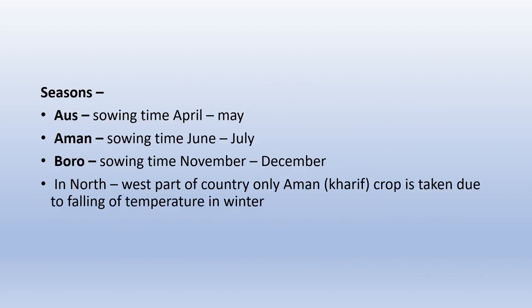Rice can be grown in three seasons: Aus, Aman, and Boro. In Aus season, sowing is from April to May. In Aman season, sowing is from June to July. In Boro season (also called spring season), sowing is from November to December. In the northwest part of India, only Aman (Kharif) crop is taken due to falling temperatures in winter.